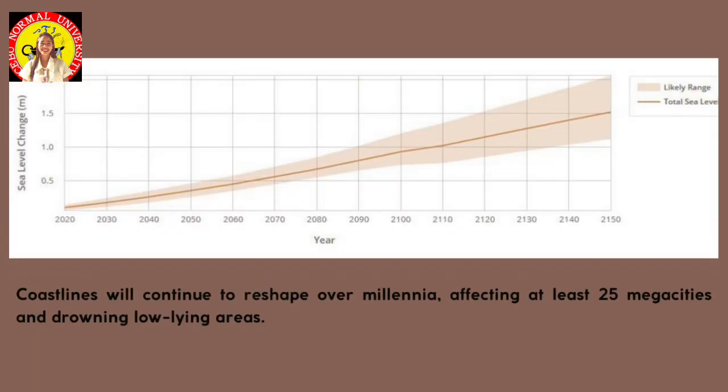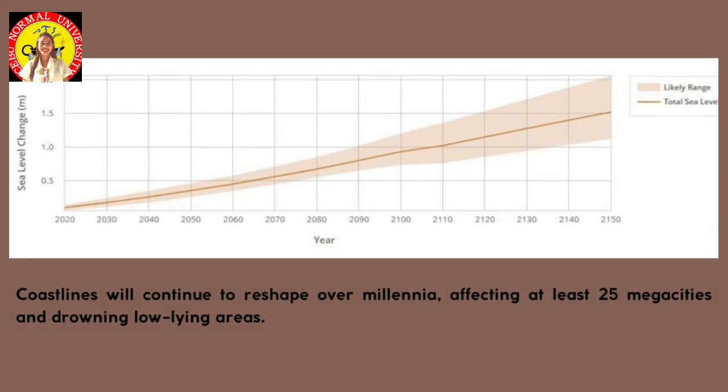Coastlines will continue to reshape over millennia, affecting at least 25 megacities and adjoining low-lying areas. Increased flooding risk, beach erosion, habitat loss for animals and plants living on or near the shore, and the displacement of an estimated 267 million people worldwide are all potential effects of rising sea levels.